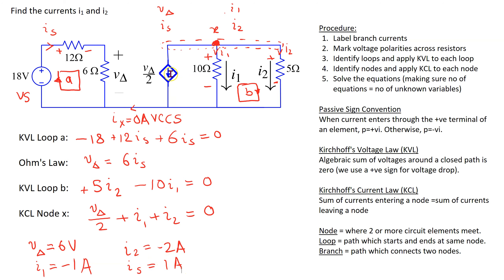From the circuit we can see that this current source produces current flowing through the 10 ohm resistor and the 5 ohm resistor in the direction from bottom to top. Since this is opposite to the direction of the assumed current, we get negative values for i1 and i2. This means that in reality there is a 1 amp current flowing one way and a 2 amp current flowing the other way through the 5 ohm resistor.